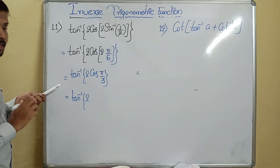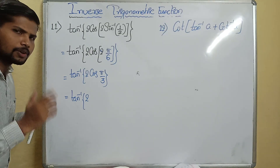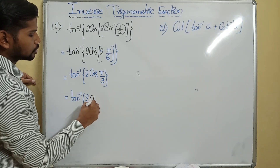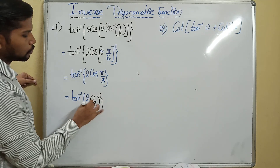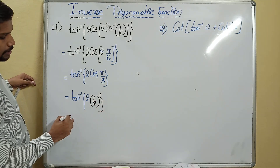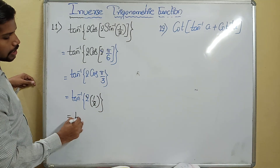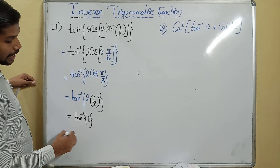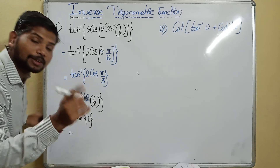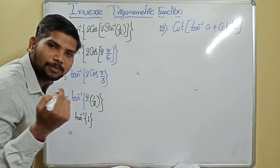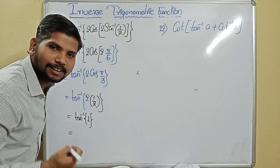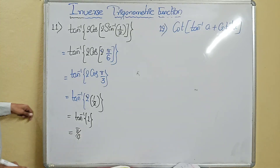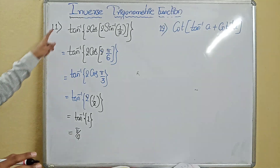The next step is tan inverse of 2 cos(pi by 3). What is the value of cos(pi/3)? Exactly, its value is 1 by 2. The 2s cancel, giving tan inverse of 1. Tan is having the value 1 for which angle? Yes, exactly it is pi by 4 or 45 degrees.